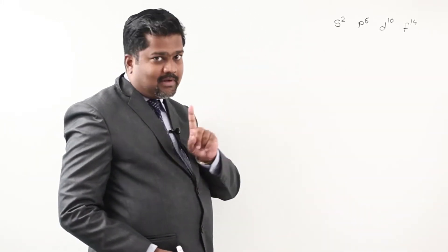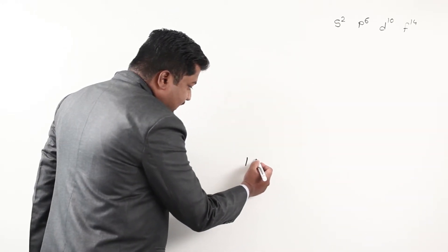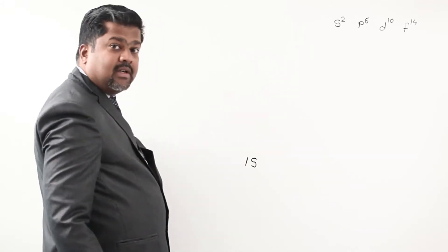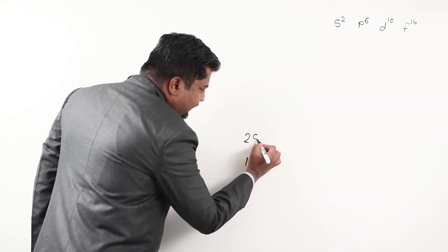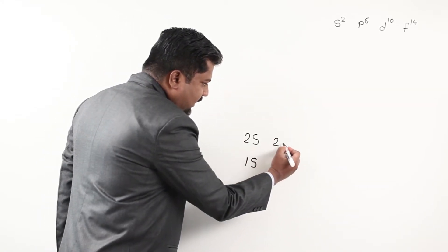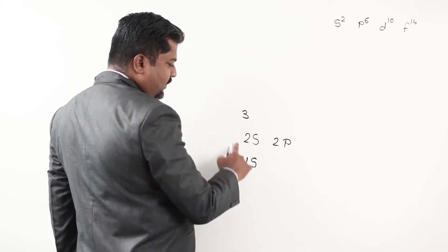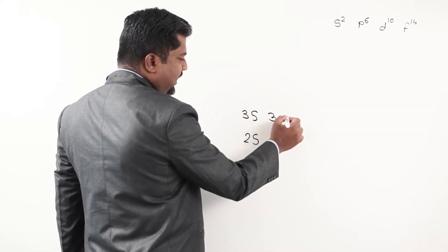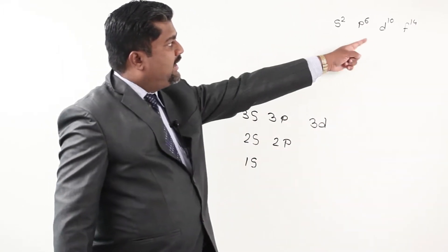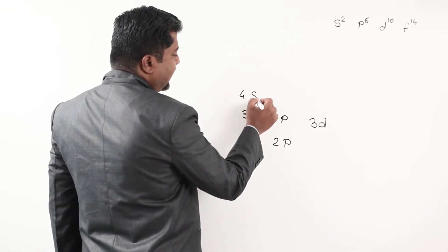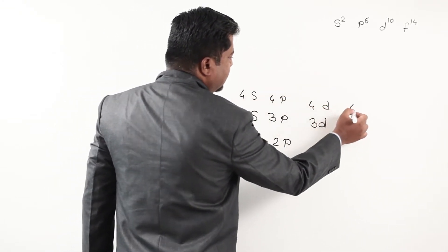Writing from bottom to top, I start with 1s. Then I write 2s, and next to that 2p. As shells get higher we add one more subshell each time: 3s, 3p, 3d. Then 4s, 4p, 4d, 4f. Then 5s, 5p, 5d, 5f. Then 6s, 6p, 6d, 6f.